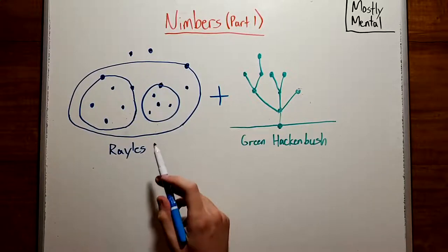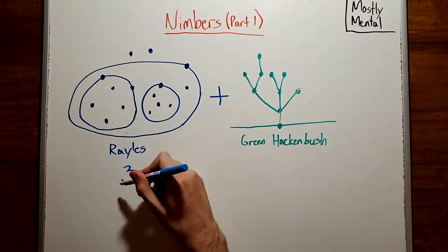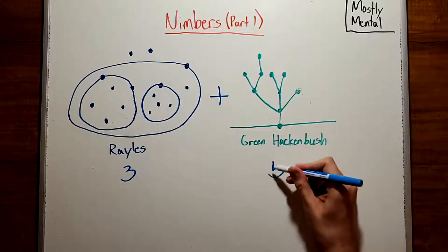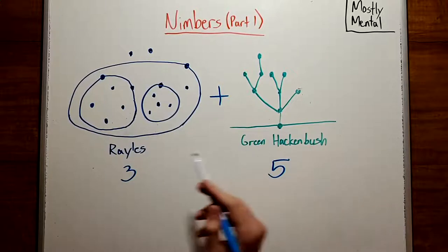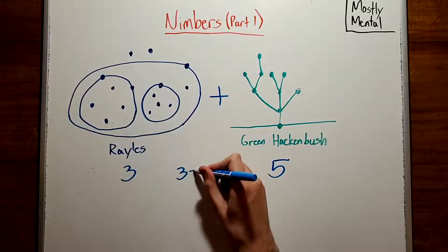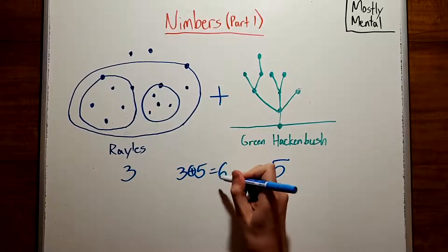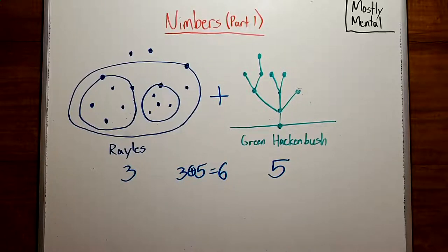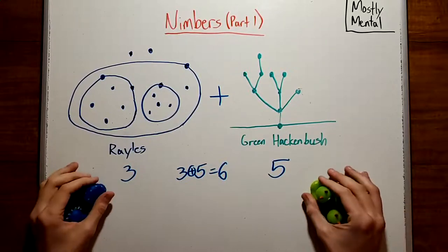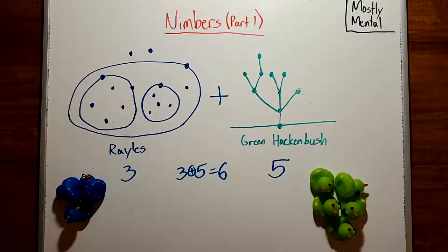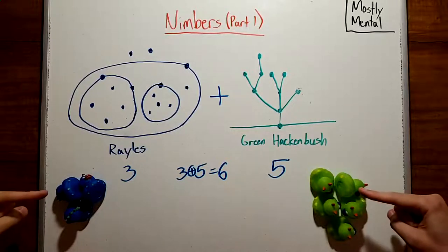So if one game has value three and the other has value five, then their sum has value three plus five, which is six. In fact, nim sum itself is a sum. It's the sum of games with just one pile. And it's easy to check that for a single pile, the Sprague-Grundy value is just the size of the pile. So the value of a game of Nim is the nim sum of the sizes of the piles.